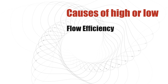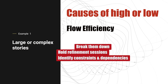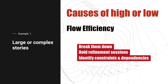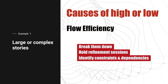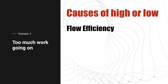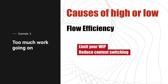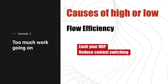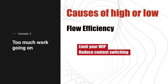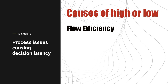The reasons for high or low flow efficiency could be many. For example, your stories are too large — they're too complex — so break them down. Make sure the story has been refined prior to taking it into sprint, and any dependencies or constraints are known. Or it could be nothing specifically wrong with the story, but you're trying to work on too many things at the same time. So limit your work in progress and reduce your context switching. Start by putting a WIP limit on your in-progress column and stick to it — don't ignore it.